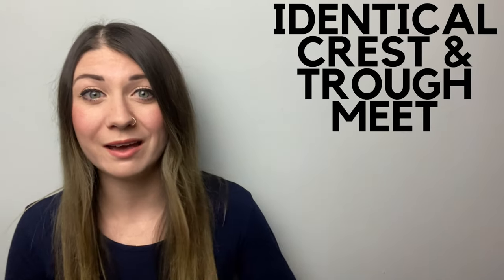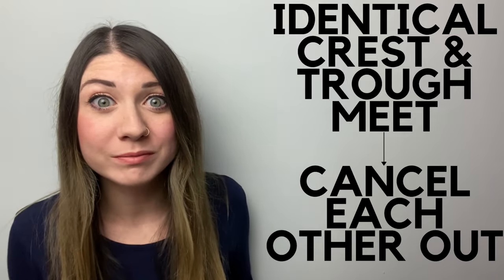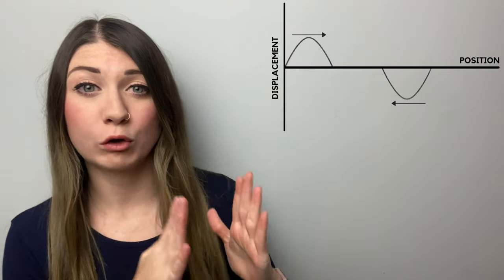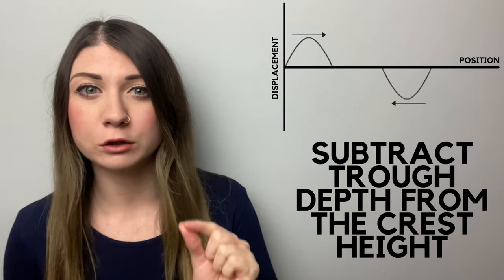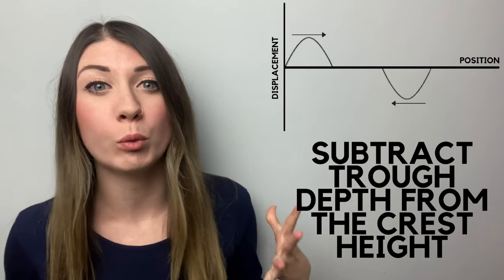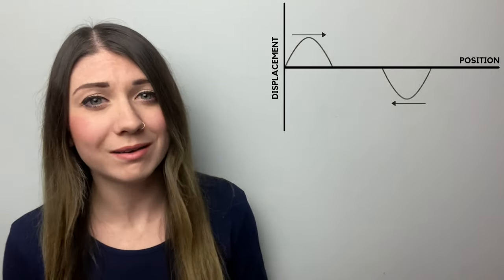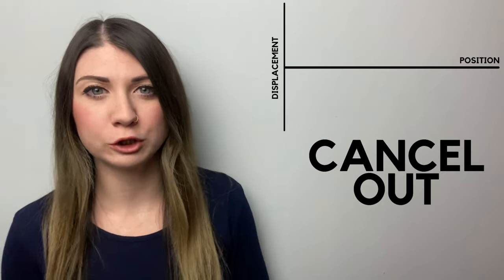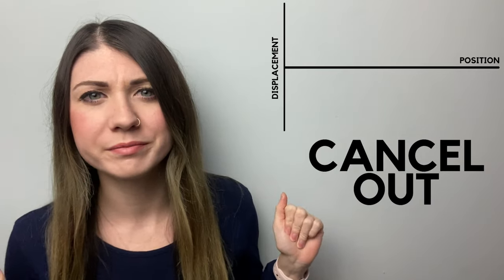Can anyone guess what would happen if an equal sized crest and trough would meet? They would cancel each other out. So if one wave was at a crest and the other wave was at a trough, you would subtract the trough depth from the crest height to get your combined wave. Therefore if the crest and the trough were the same size, then they would cancel out and produce a flat line and therefore a flat water surface.